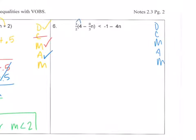Problem 6, we distribute 3.5 times 4 is 6. 3.5 times negative 3/5n is negative 4n. If you don't touch it, rewrite it.